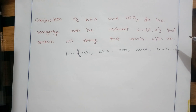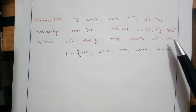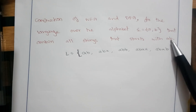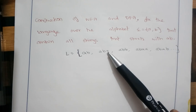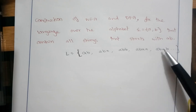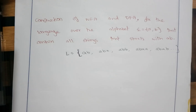Whenever a string starts with AB, our NFA or DFA should accept the input. The minimal input is AB, and it can be followed by either A or B, or any combinations of A and B of any length. We have to construct the NFA and DFA for such inputs.